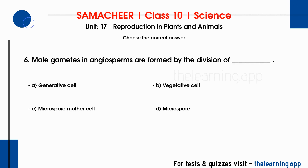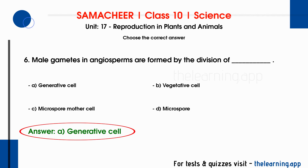Sixth question: male gametes in angiosperms are formed by the division of DASH. Options are A. Generative cell, B. Vegetative cell, C. Microspore mother cell, D. Microspore. The correct answer is option A, Generative cell.